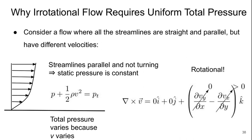Now, it's not obvious perhaps why irrotational flow requires that the total pressure be uniform. Well, let's consider a counter example. Consider a flow where all the streamlines are straight and parallel, as I've shown here, but have different velocities. If the streamlines are parallel and not turning, the static pressure must be constant. So, looking at Bernoulli's equation, P plus one-half rho V squared equals Pt, the P is the same for all the terms. This says that since the velocity is varying, right away we can see that Pt, the total pressure, is non-uniform throughout this profile of velocity.